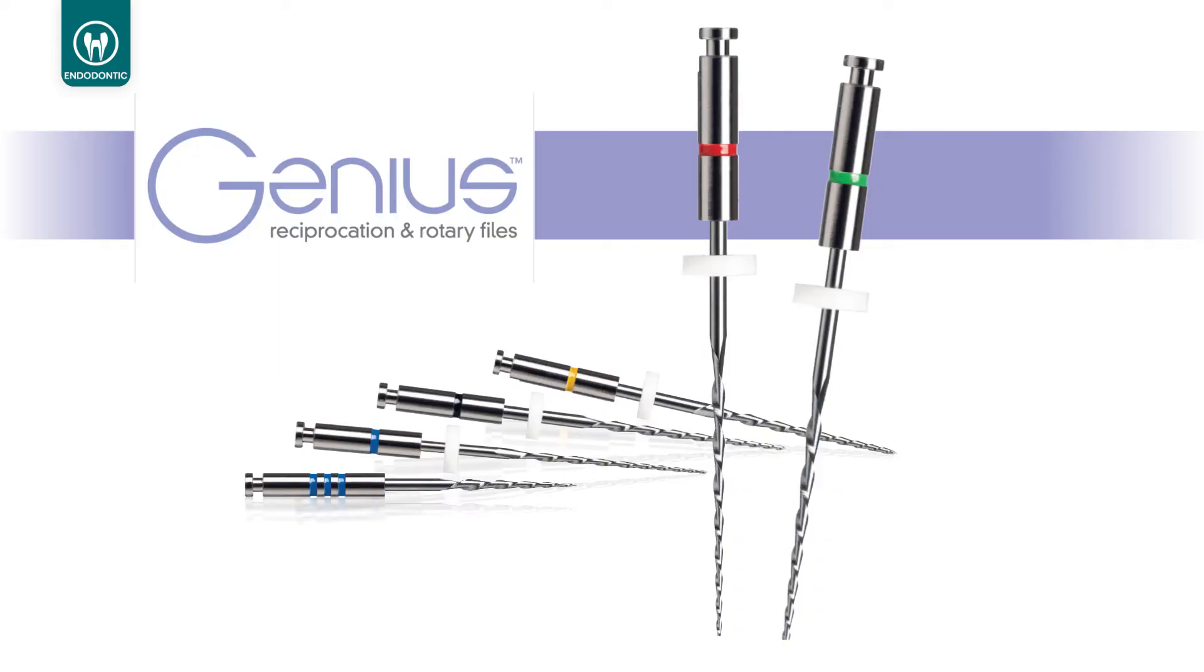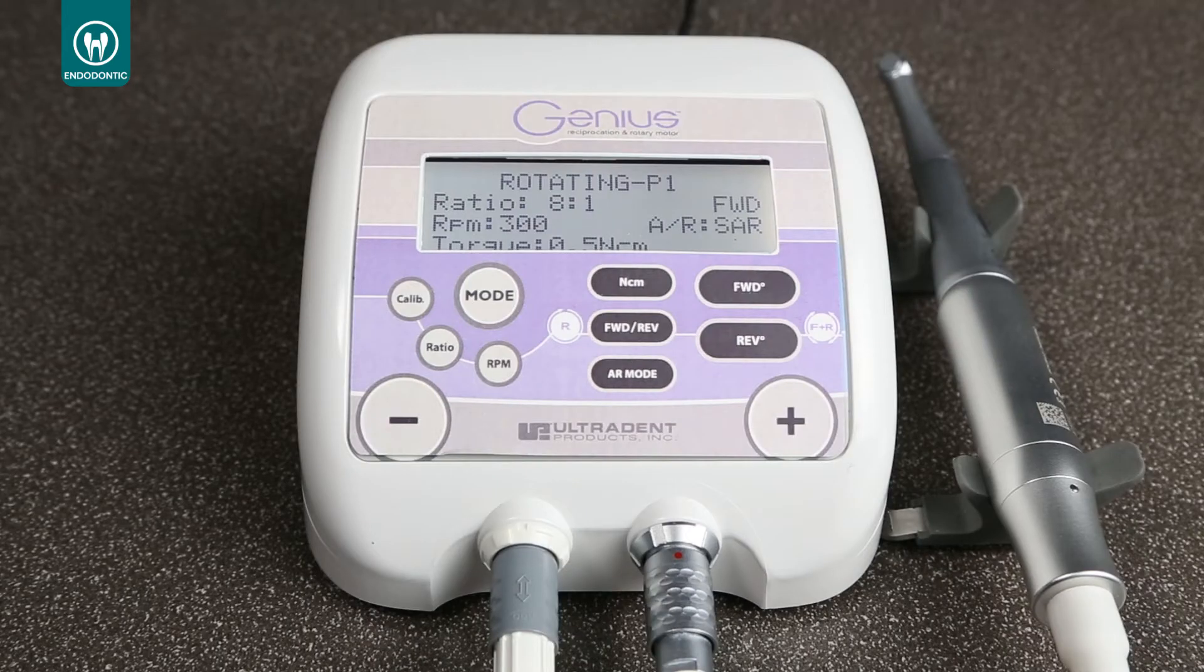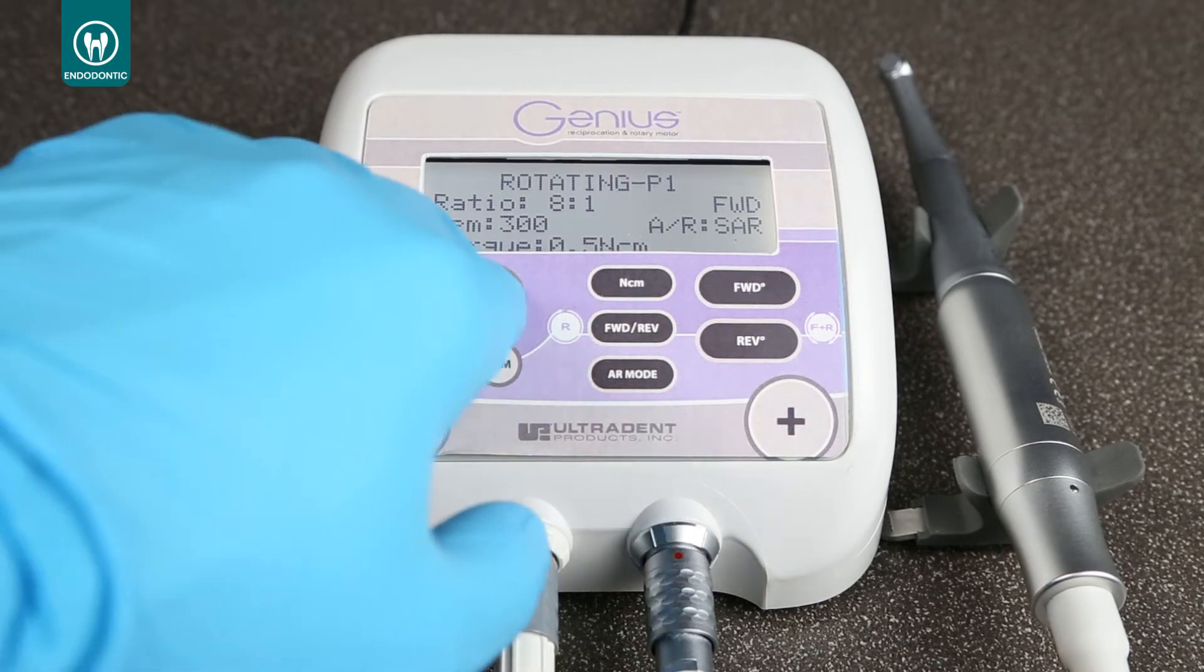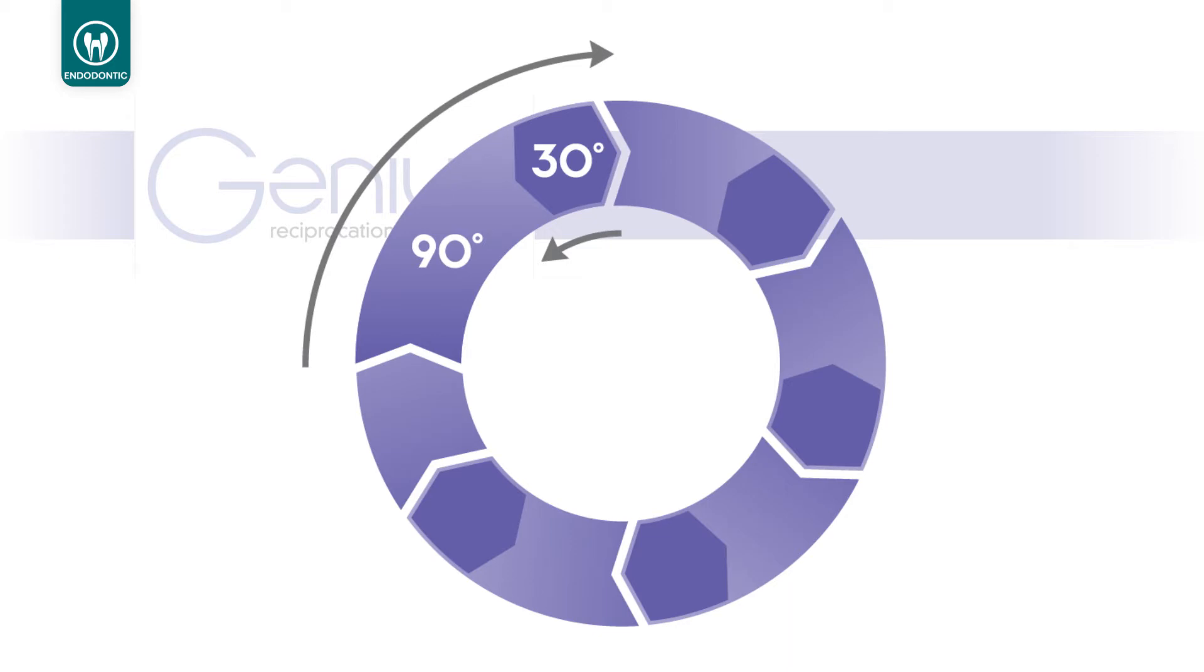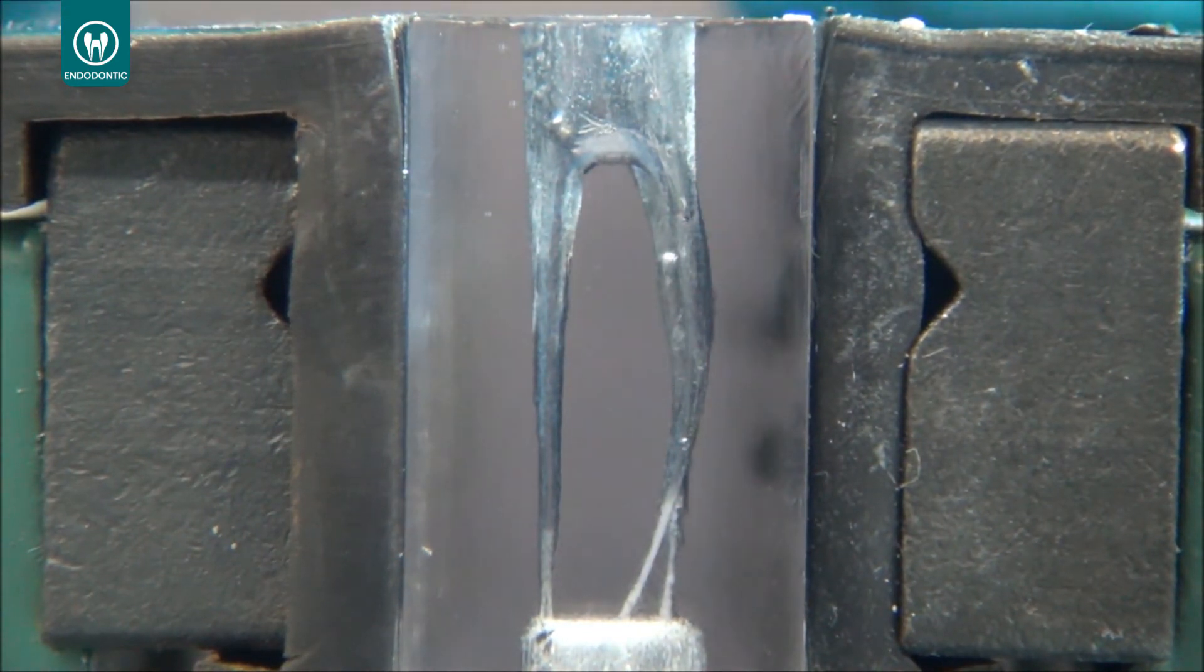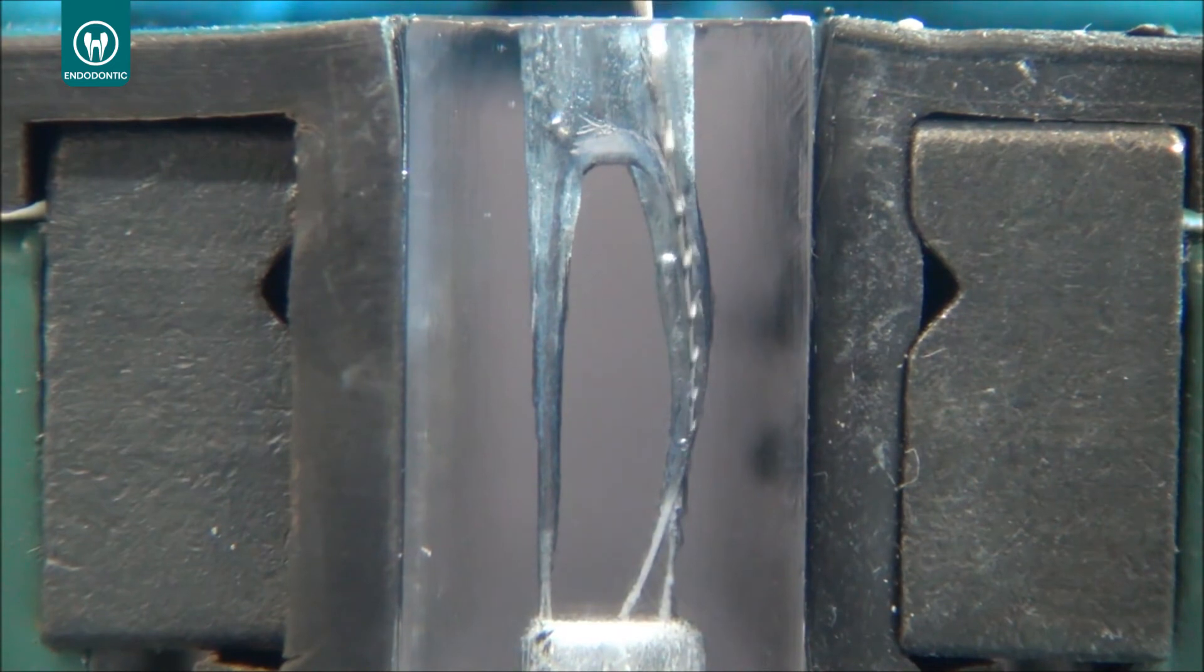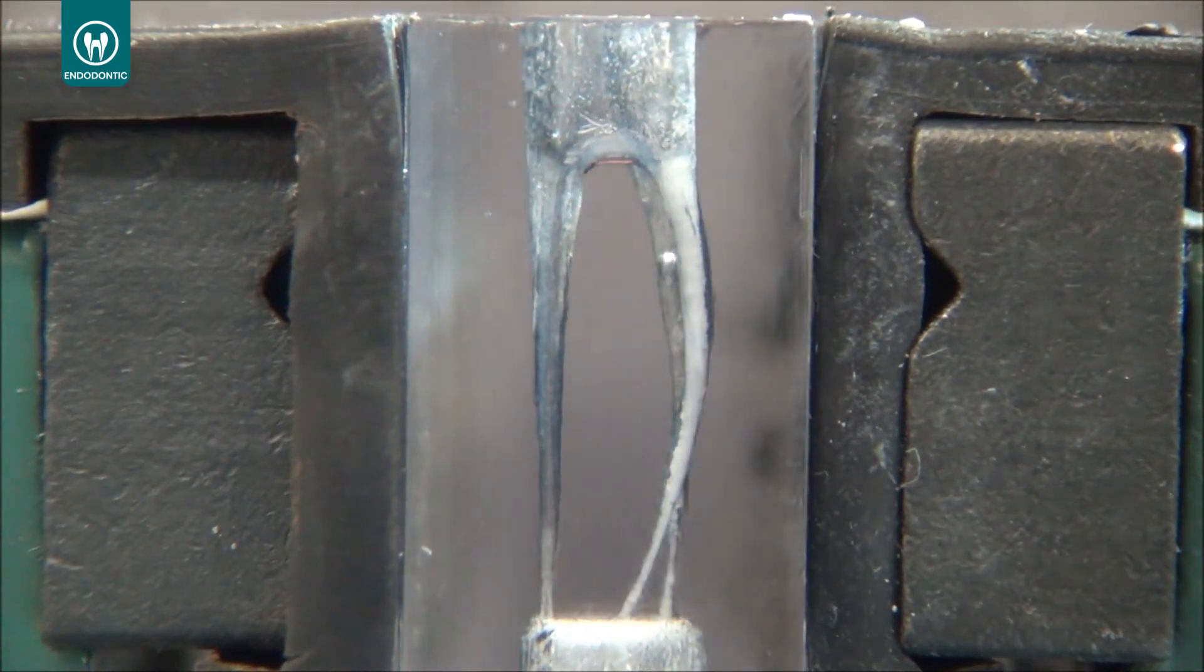After determining the working length and creating a glide path, the first file that we will use is the 2504, the red one. Go to the Genius motor, press the mode button, going from rotation to reciprocation. We will use the 90-30 reciprocation. It means that in 90 you cut, 30 degrees you release the stress of the file. So the 2504 Genius file is an S cross-section file. It means that it cuts a lot. So you just put the file inside the canal, feel some resistance, go back a little bit, 0.5 to 1 millimeter, and then start with brushing movements towards the denting walls and doing the instrumentation.